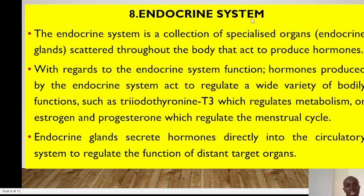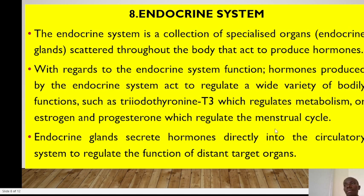The endocrine system is a collection of specialized organs called endocrine glands, including the hypothalamus, pituitary gland, thyroid gland, adrenal gland, and several others. The thyroid gland produces triiodothyronine — T3 and T4 — which regulate metabolism. We also have estrogen and progesterone that regulate the menstrual cycle. Endocrine glands secrete hormones directly into the circulatory system to regulate the function of distant target organs.